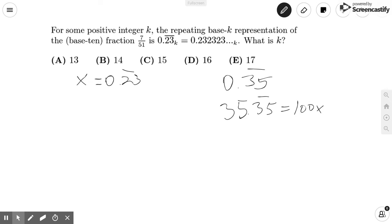And then we know that 35.35 repeating, if this equals x, 35.35 repeating is 35 plus x equals 100x.